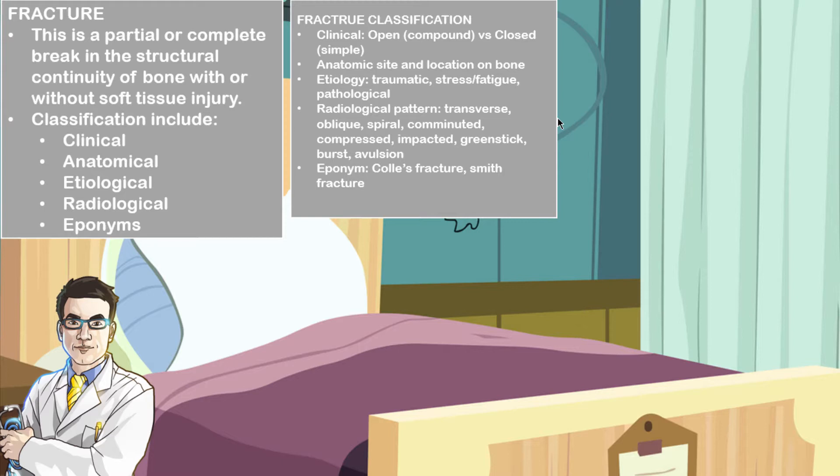In the anatomical classification, this uses the anatomical site and location of the bone. For example, you could have a proximal, middle, or distal fracture of a bone — for example, the radius.